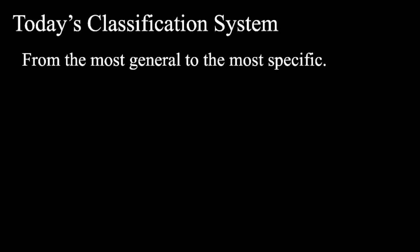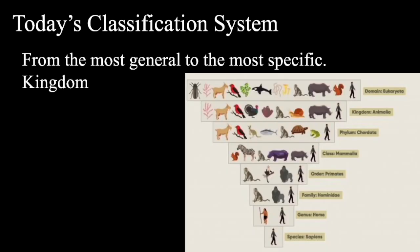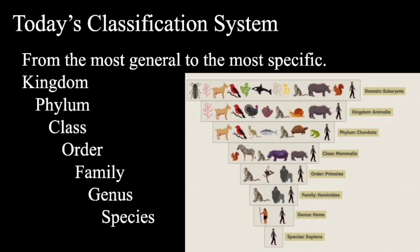Today's classification system is organized from the most general to the most specific. The most general is kingdom, and as you drill down to the most specific, it goes kingdom, phylum, class, order, family, genus, and species.